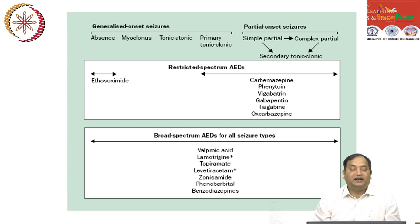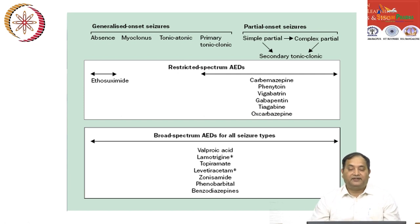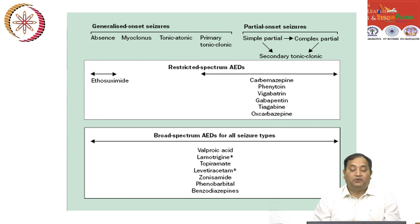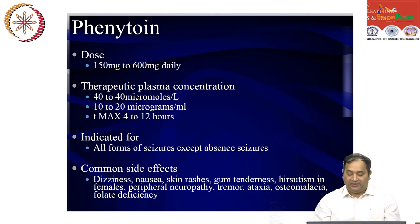For absence seizures specifically, ethosuximide is the single drug of choice. For partial onset seizures with or without secondary tonic-clonic, drugs include carbamazepine, phenytoin, vigabatrin, gabapentin, tiagabine, and oxcarbazepine. Broad-spectrum anti-epileptic drugs useful in all seizure types include valproic acid, lamotrigine, topiramate, levetiracetam, zonisamide, phenobarbital, and benzodiazepines. Phenobarbital has a wide safety margin but is now less commonly used. Drug selection depends on seizure type and patient response.